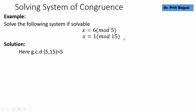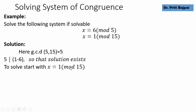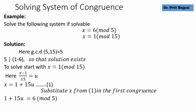We are asked to solve: X ≡ 6 mod 5, X ≡ 1 mod 15. GCD(5, 15) = 5, and it divides the difference 1 − 6 = −5, so the solution exists. We start with the larger modulus 15 and write X = 1 + 15U — call this equation 1. Substituting into X ≡ 6 mod 5 gives 15U ≡ 5 mod 5.